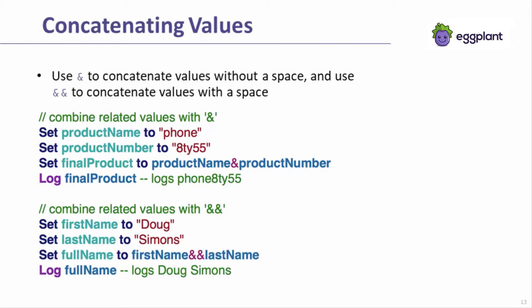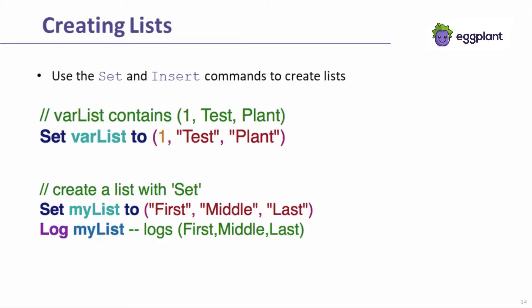Here are two examples of concatenation. Note the distinction between using one and two ampersands. Earlier in this discussion about variables, you saw the syntax using the set command for creating a basic list. Note how each item in the list is separated by a comma and the list is bounded by parentheses. These are the default components needed to define a list with the set command.